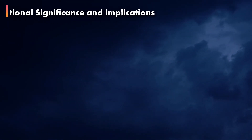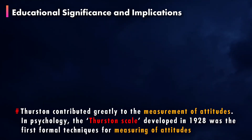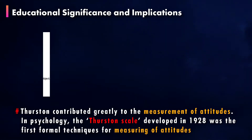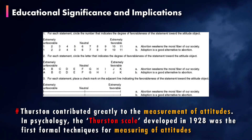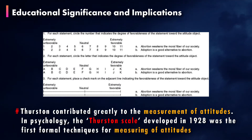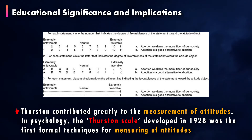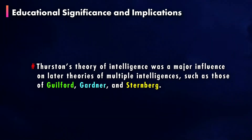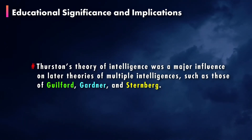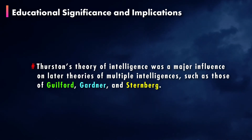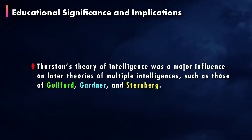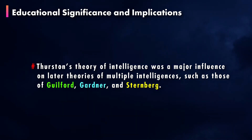Some of the major implications of Thurston's group factor theory are: Thurston contributed greatly to the measurement of attitudes. In psychology, the Thurston scale, developed in 1928, was the first formal technique for measuring attitudes. Thurston's theory of intelligence was a major influence on later theories of multiple intelligence, such as those of Guilford, Gardner, and Sternberg.